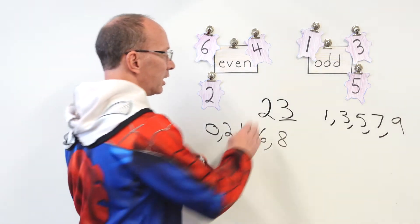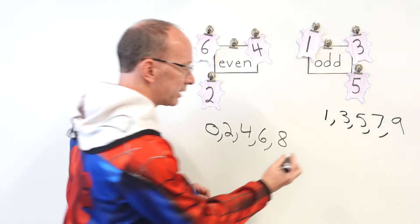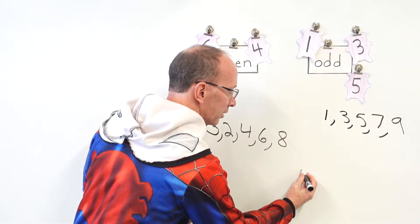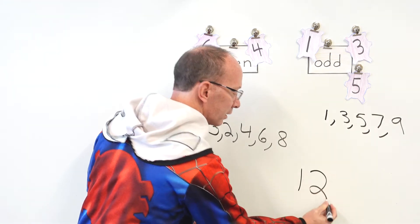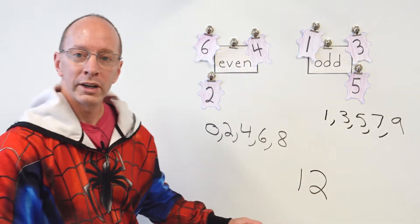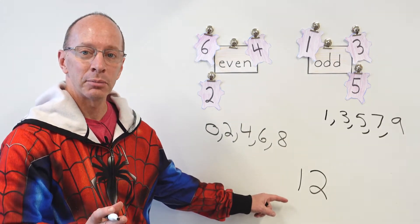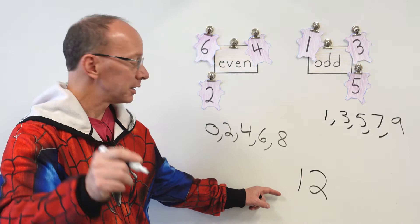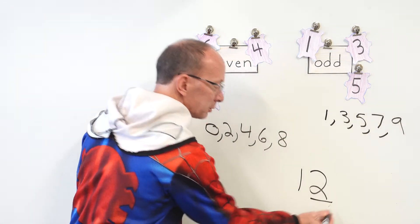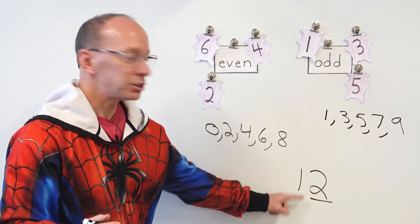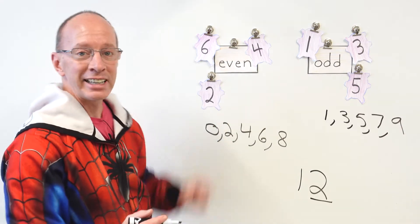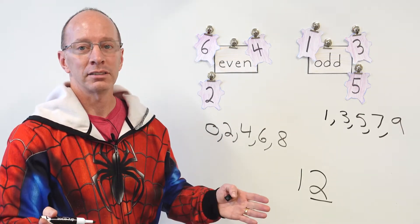Let's take another number here, all right? Let's take the number 12. What is that? Is that an odd or is that an even number? You're right. We looked at the 1's place, and that is a 2, and a 2 is an even number. You're awesome.